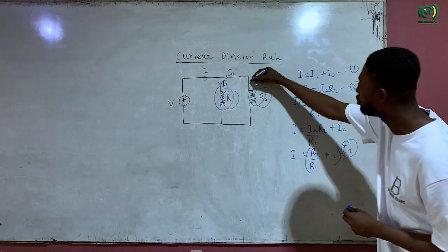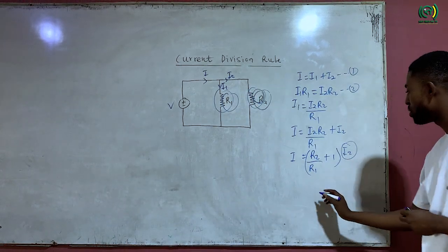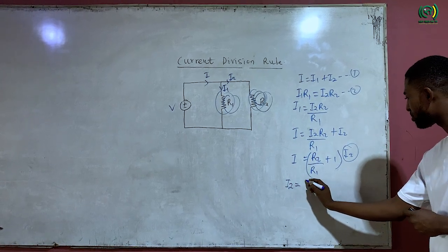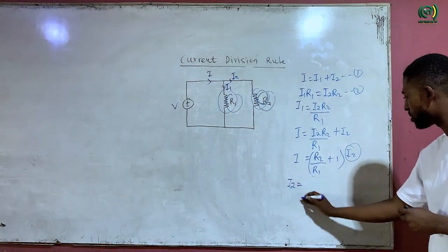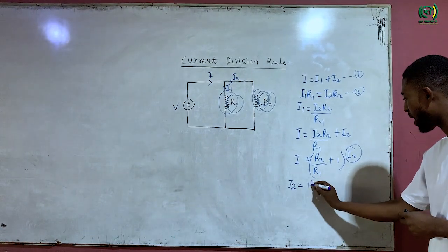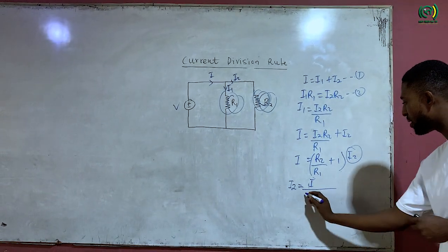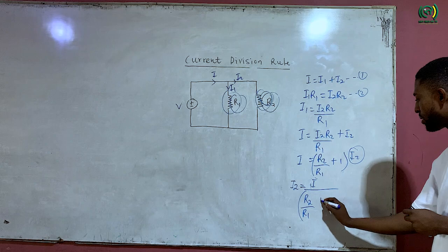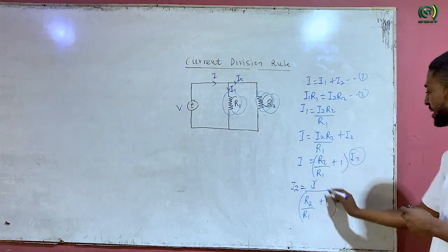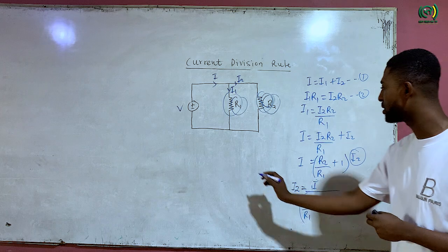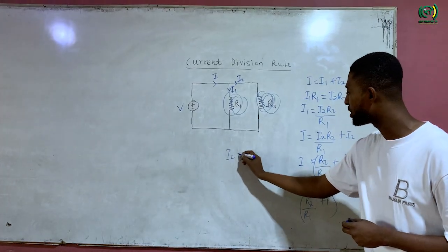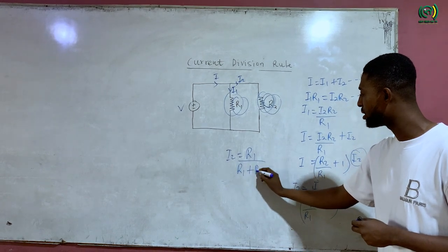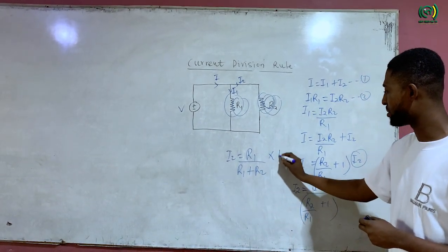Remember, I want to factor I2, which is the current flowing through resistor R2. So therefore, I2 will be equal to I over R2 over R1 plus 1. And this can be further simplified to produce I2 times I.